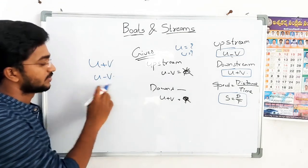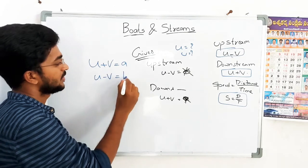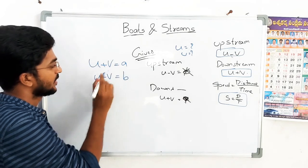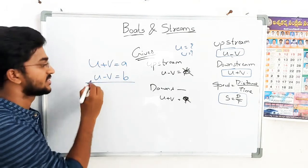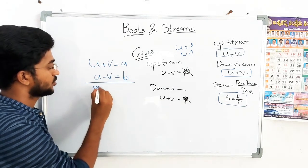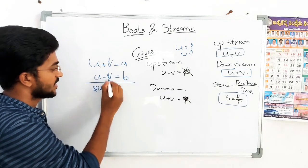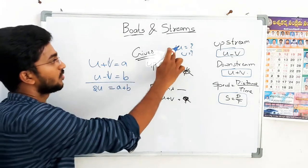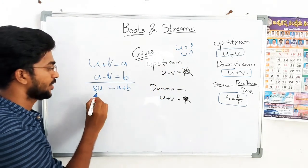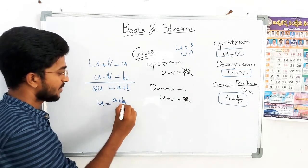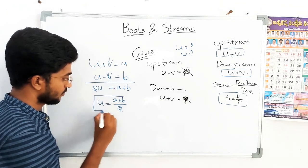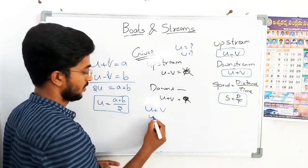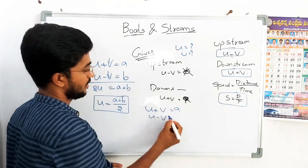So if U plus V is given and U minus V is given, let's call them A and B respectively. Then we derive: adding both equations, U plus V plus U minus V equals A plus B, so 2U equals A plus B, giving U equals A plus B divided by 2. Subtracting, V equals A minus B divided by 2.